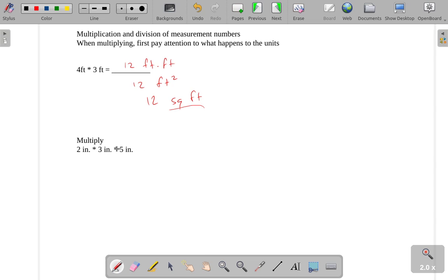We can do the same thing with inches. If we have 2 inches times 3 inches times 5 inches. Well, 2 times 3 is 6. Multiply that by 5. We get 30. And we have inches times inches times inches.